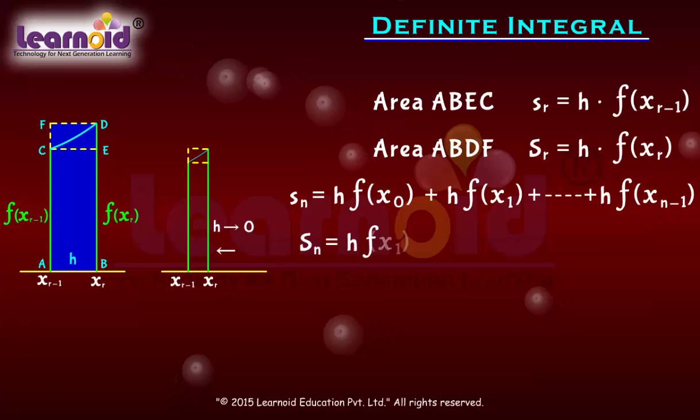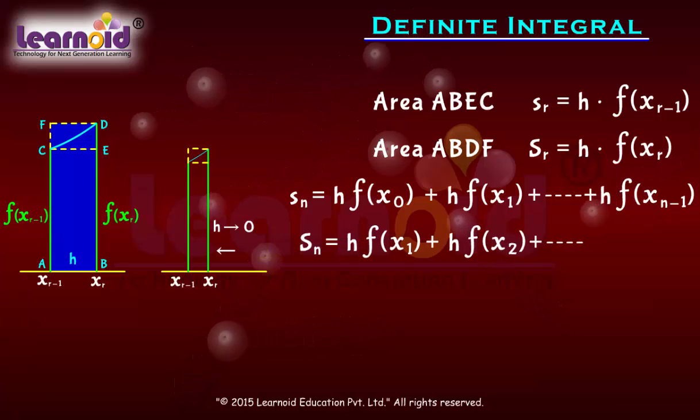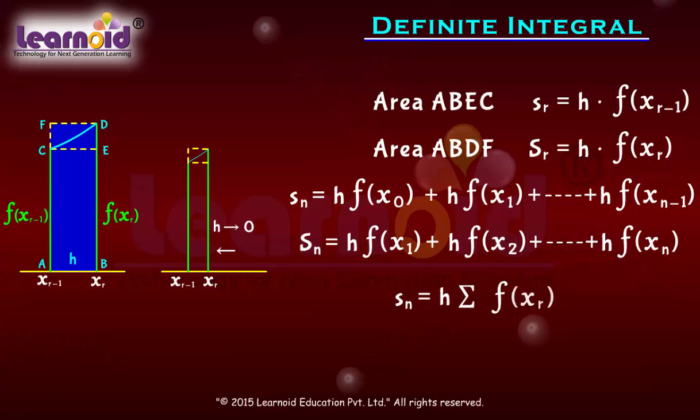We can write sₙ as h times the summation of f(xᵣ) from r = 0 to n-1. Similarly, Sₙ = h times the summation of f(xᵣ) from r = 1 to n.